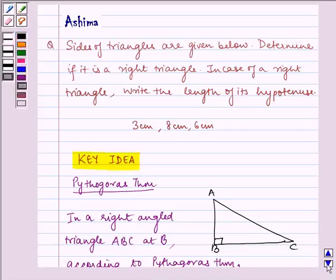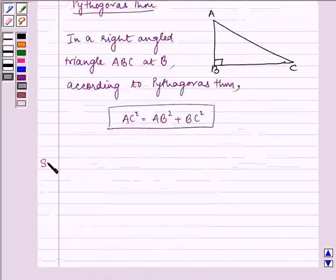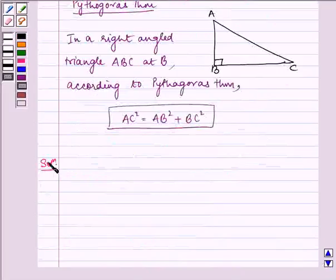Now let us write the solution. Given the sides of a triangle as 3 cm, 8 cm, and 6 cm.